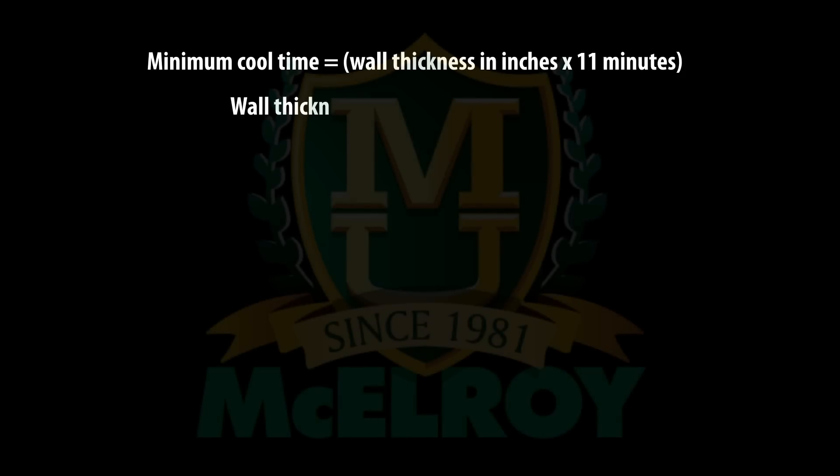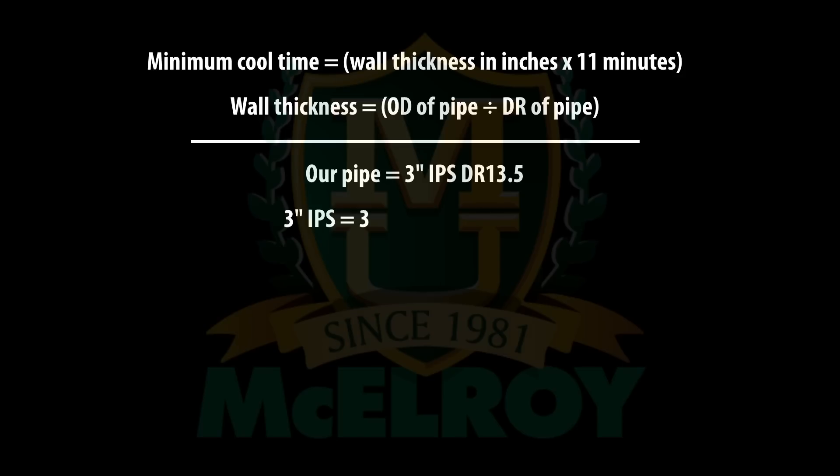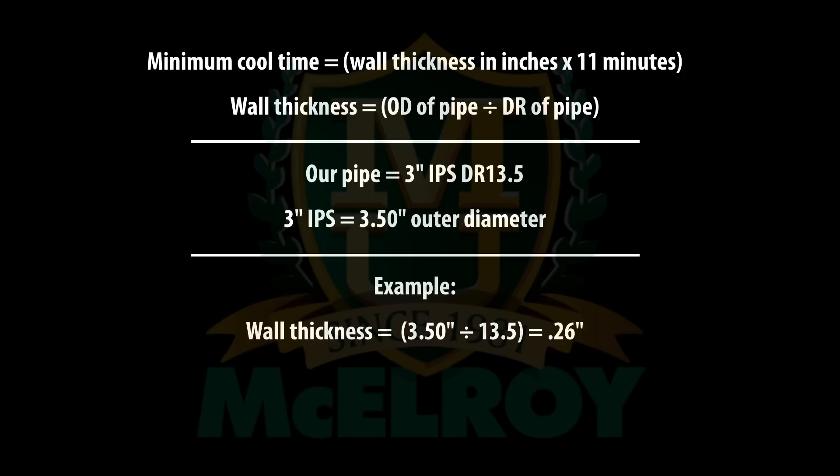To figure out the wall thickness, we will take the outer diameter of the pipe and divide it by the dimension ratio or DR. You can look up the outer diameter dimensions of most pipe sizes in the back of our catalog. Our pipe is 3 inch IPS DR 13.5, which is an outer diameter of 3.5 inches. So we will take 3.5 inches and divide it by 13.5, which gives us a wall thickness of 0.26 inches.